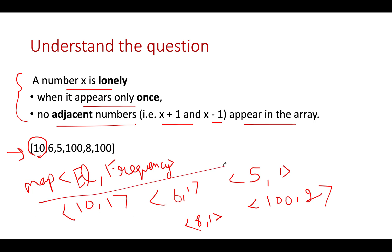Now that we've built the map, I'll iterate over all entries one by one. The first element I see is 10 with frequency 1. I check whether the frequency is greater than 1; if it is, I'll skip it. It's not, so I'll check the next constraint.